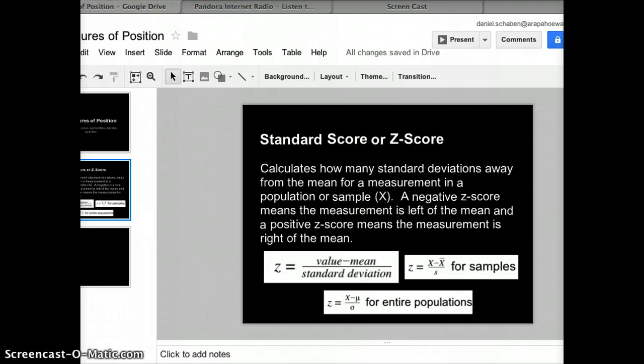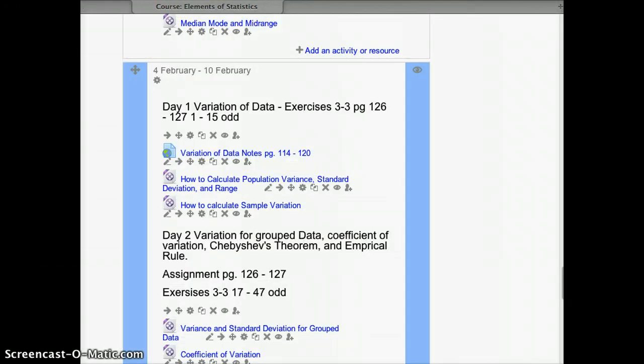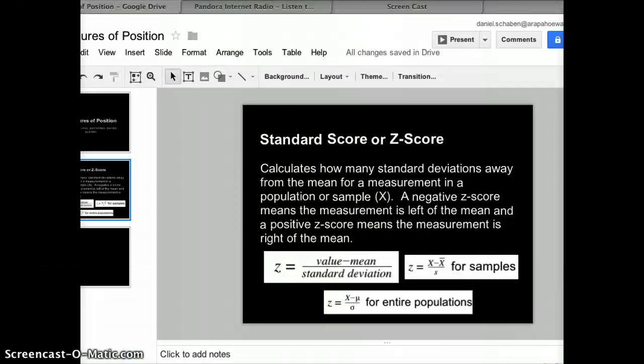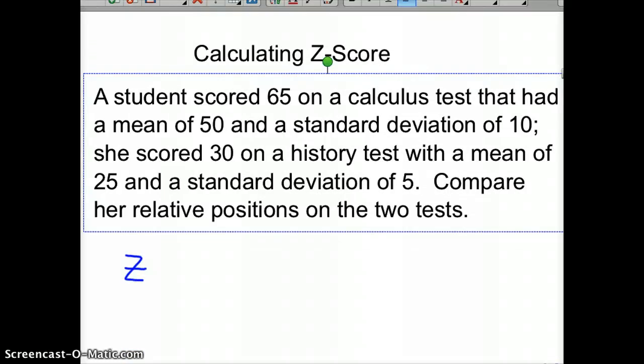So we know the equations. Back to our problem. She scored 65, that was her measurement. So z equals 65 minus the mean of 50, divided by the standard deviation of 10.